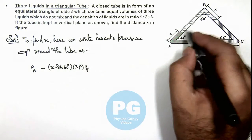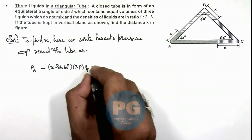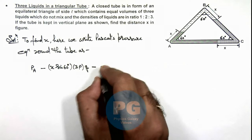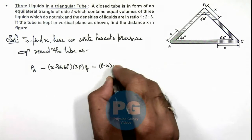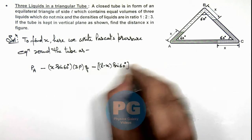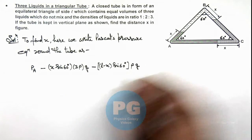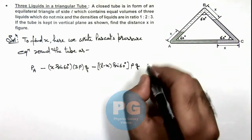If we move further, this density is ρ, so we can write minus (l - x)·sin(60°)·ρ·g.